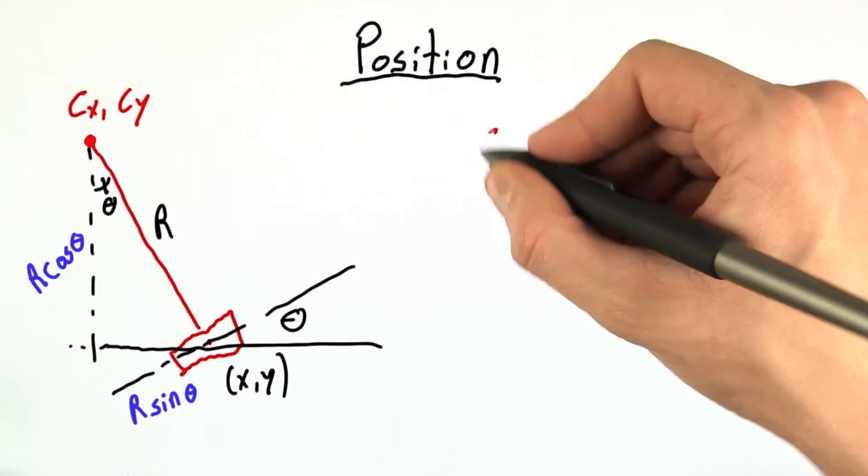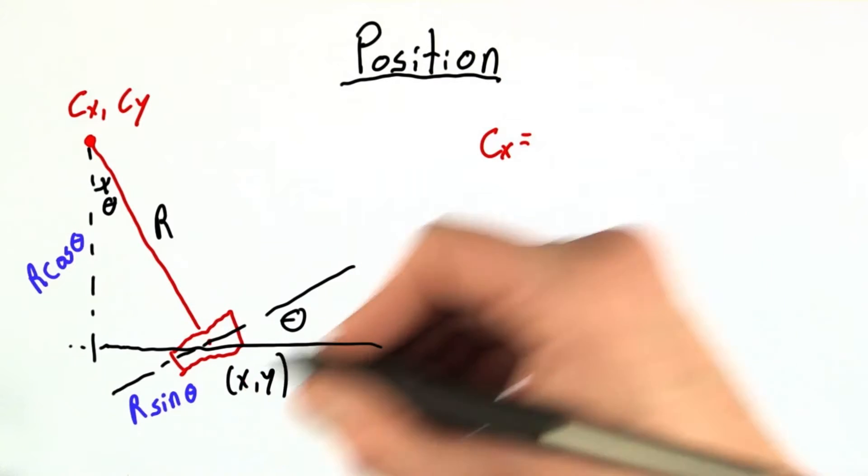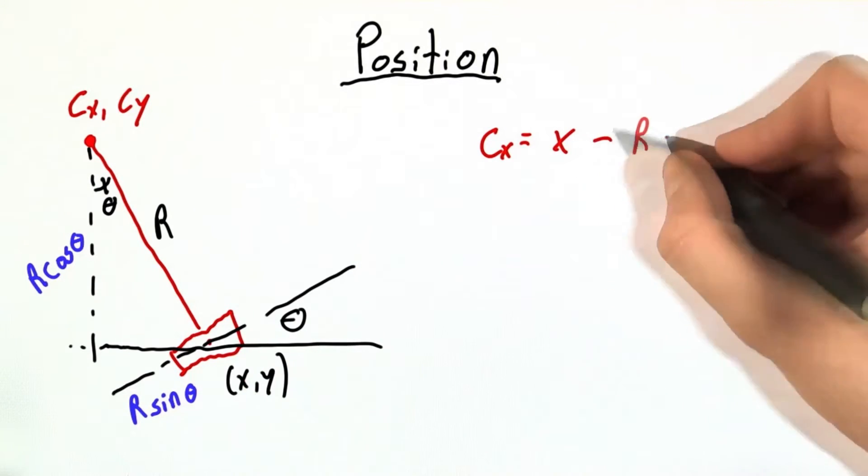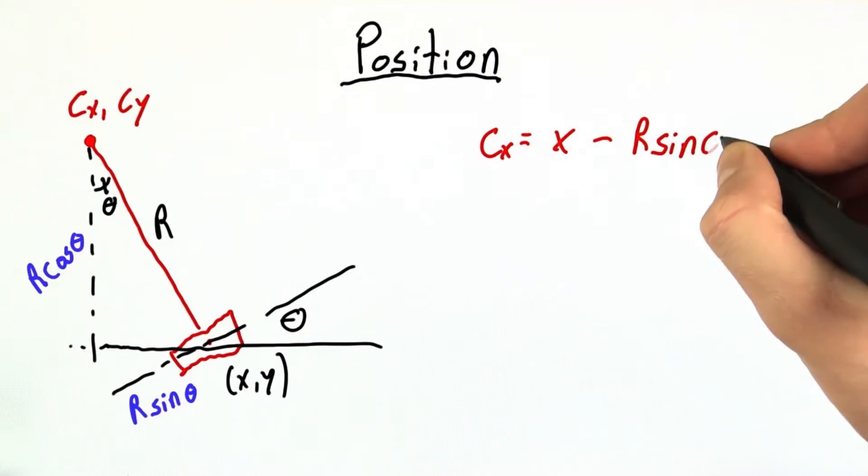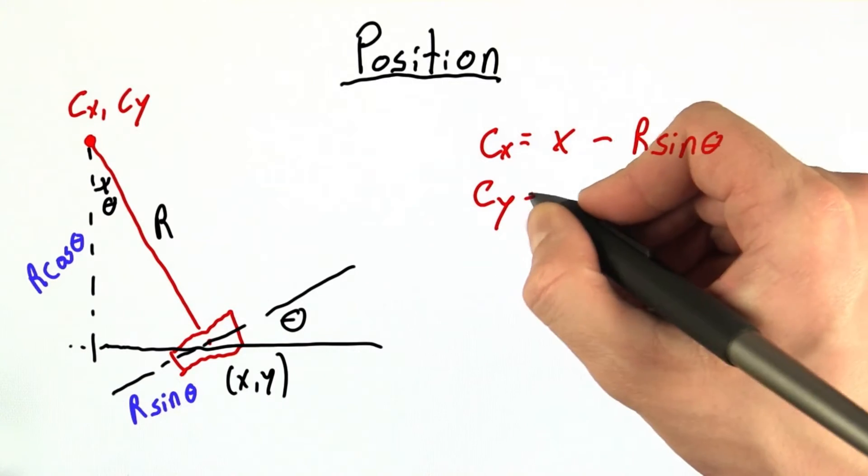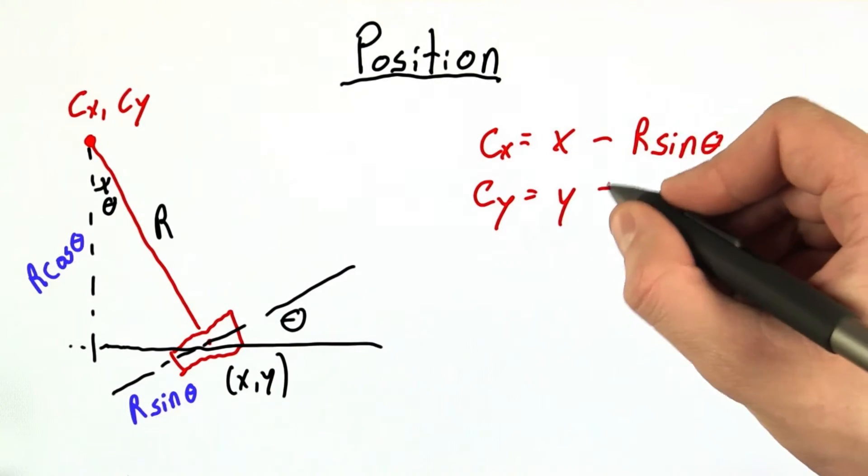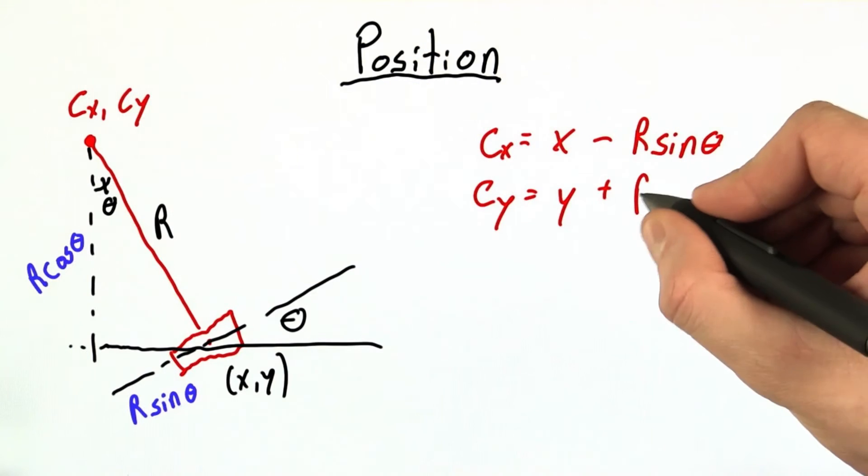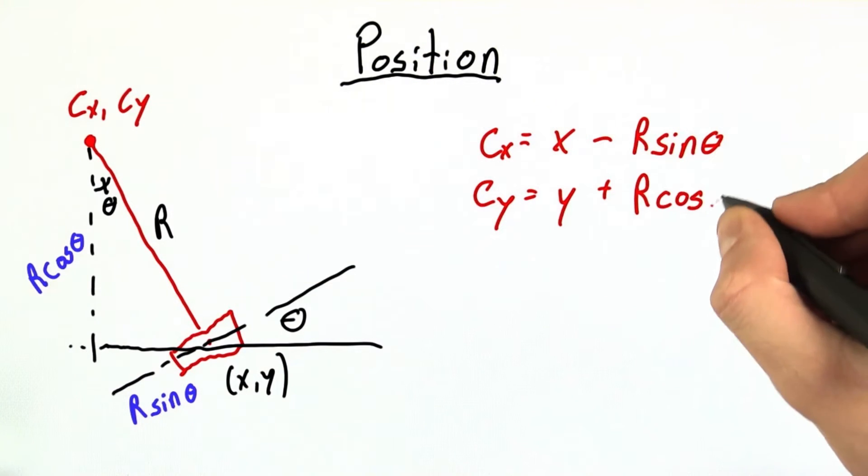That means that cx is just equal to the initial x position minus this extra distance, r times the sine of theta, and cy is equal to the initial y position plus this extra distance, r times the cosine of theta.